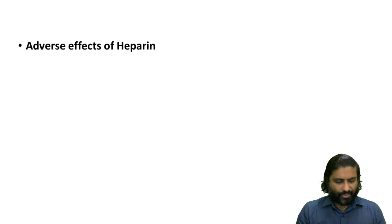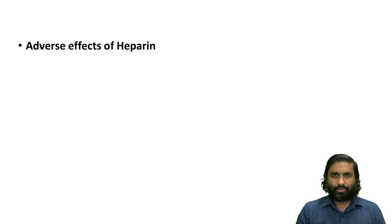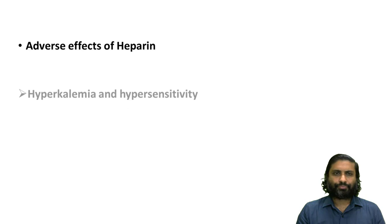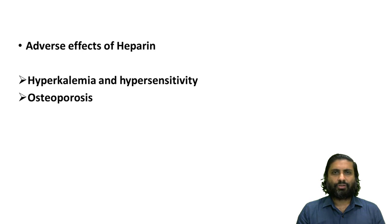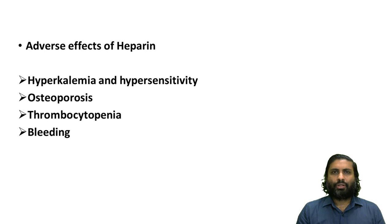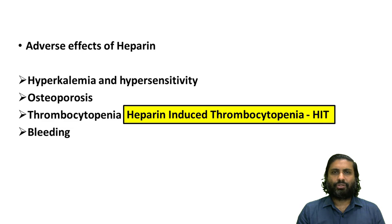Regarding the adverse effects of heparin: like any other anticoagulant, heparin causes bleeding. In addition, it also causes hyperkalemia and hypersensitivity in certain patients. On long-term administration, heparin can cause osteoporosis. In certain patients, it can cause thrombocytopenia — called heparin-induced thrombocytopenia, or HIT.